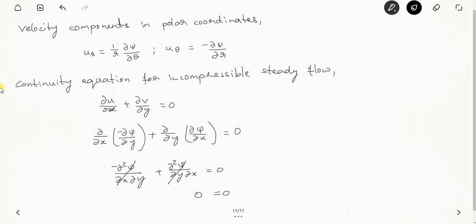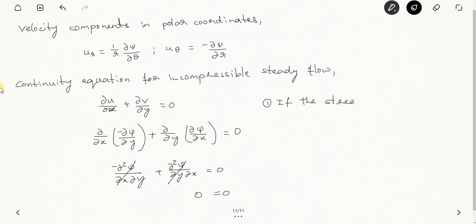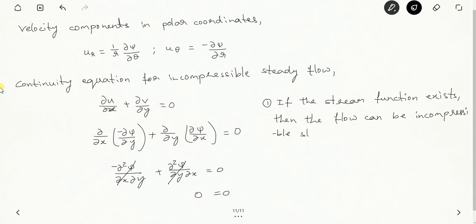From this we can directly say that if a fluid flow has a stream function, then the flow is itself confirmed to be incompressible and steady. So the first property is: if the stream function exists for any particular fluid flow, then the flow is an incompressible steady flow. However, it may be either rotational or irrotational — we still need to confirm that.